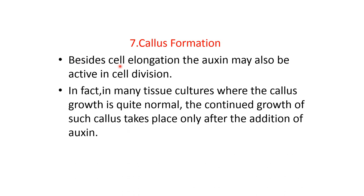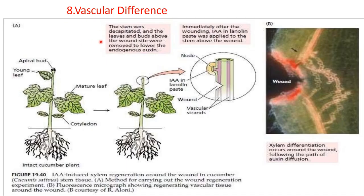Callus formation. Besides cell elongation, auxin may also be active in cell division. In tissue cultures where callus growth is quite normal, continued growth of such callus takes place only after the addition of auxin. Vascular differentiation. Auxin induces vascular differentiation in plants, as confirmed in tissue culture experiments and studies of transgenic plants. Cytokinins are also known to participate in differentiation of vascular tissue, and it is believed that vascular differentiation in plants is probably under the control of both auxins and cytokinins.